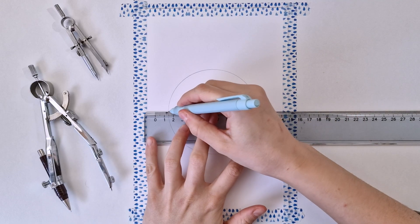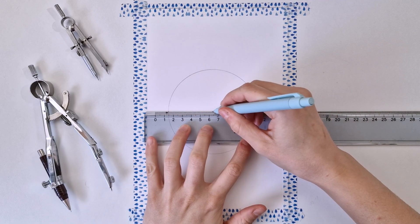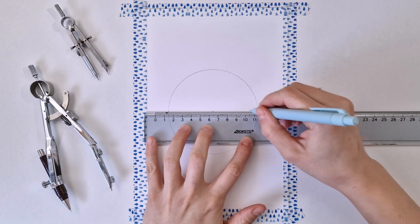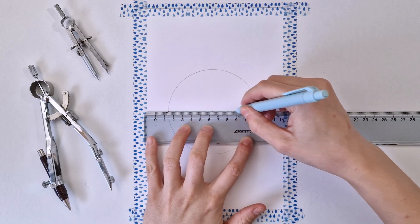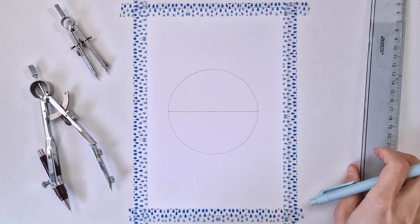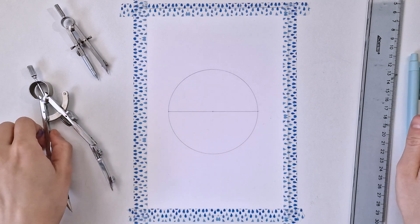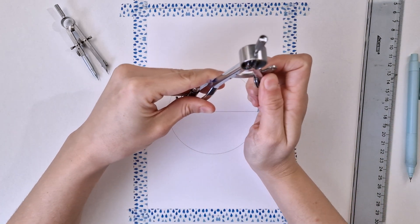Next thing I'm drawing the horizontal line. As always, you can eyeball it, you can measure the distance, whatever works for you. Just make sure the horizontal line is passing through the center of the circle.